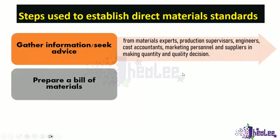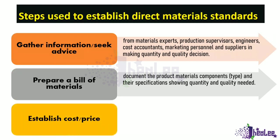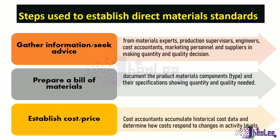Step two: prepare a bill of materials — document the product materials, components, and their specifications showing quantity and quality needed. The third step is to establish the cost or price, basically determining the standard price. Cost accountants accumulate historical cost data and determine how costs respond to changes in activity levels.